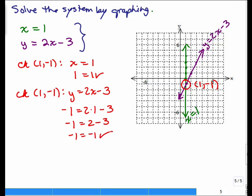Good. So that means our ordered pair, it looks like our ordered pair over here is correct. 1, negative 1 is the solution. All right, let's try one more.